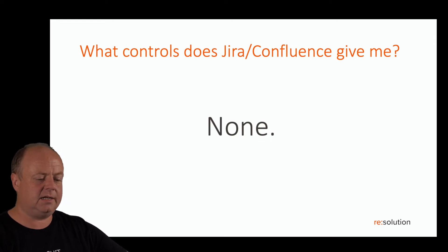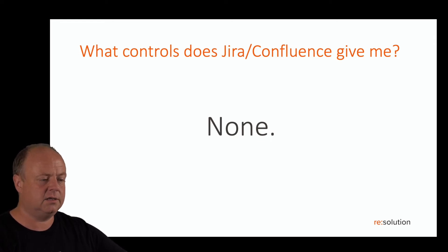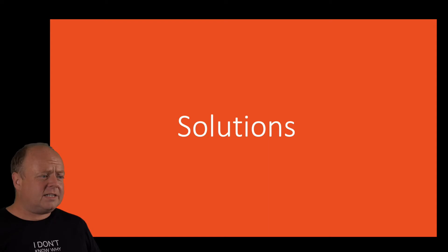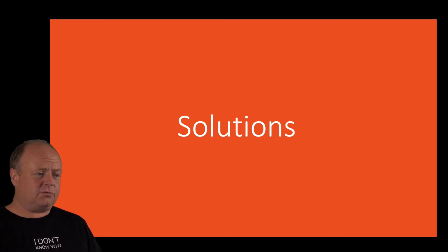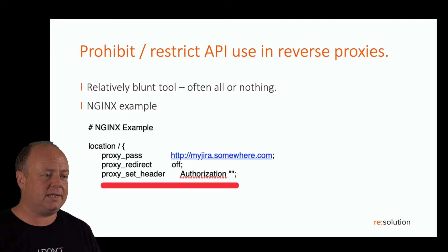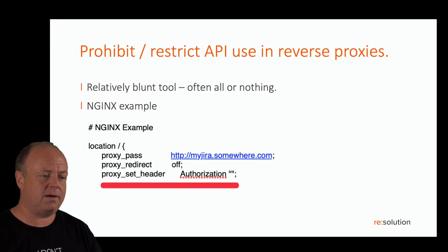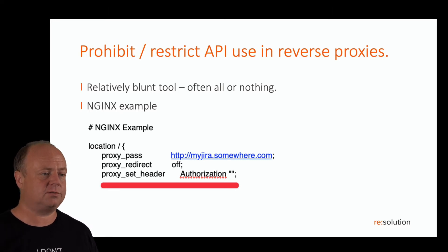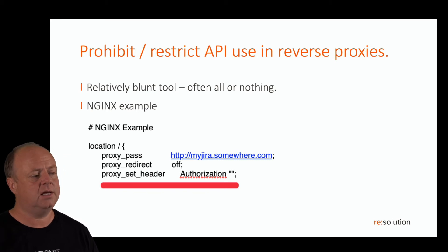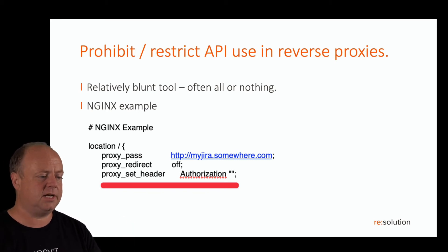What have we seen some customers doing in the past? A relatively blunt tool is to restrict API usage — or more like forbid the use of basic authentication — on reverse proxies or proxies in front of your Jira or Confluence. Here's an example for Nginx: it just overwrites the authorization header.